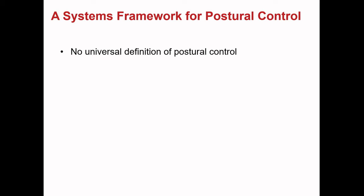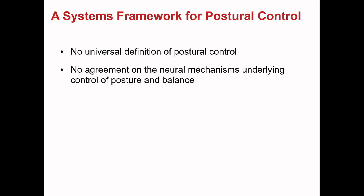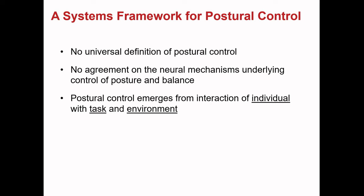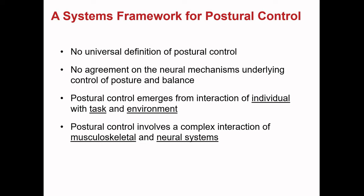The systems theory for postural control is motivated by several assumptions. It assumes there is no currently available universal definition of what postural control actually is, and no agreement in the literature on what the neural mechanisms underlying the control of posture and balance exactly are. It assumes that the control of posture emerges from the interaction of the individual, the task, and the environment, and that postural control involves a complex interaction of musculoskeletal and neural subsystems.